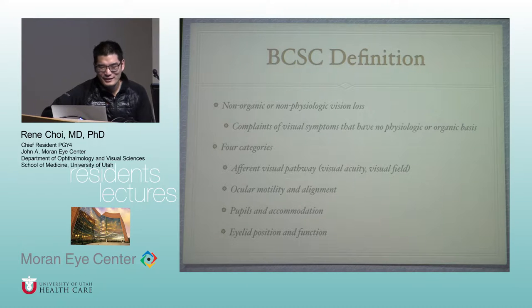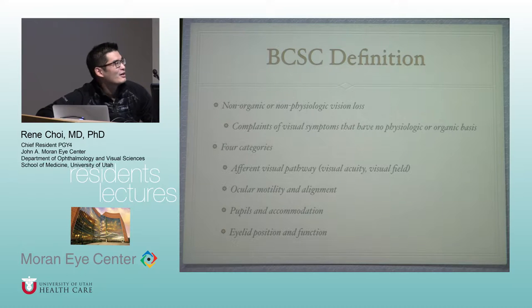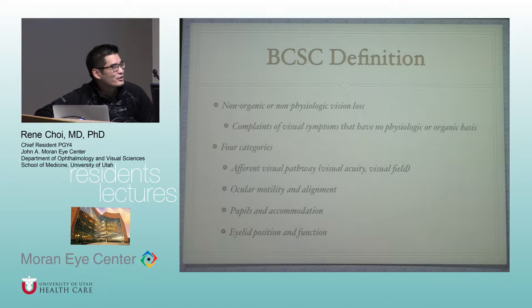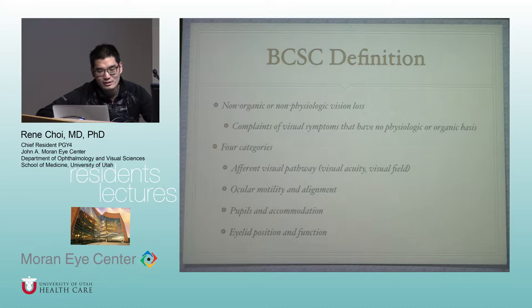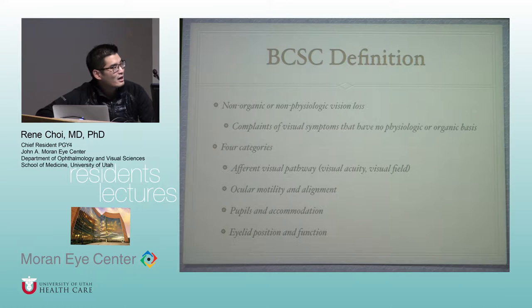The BCSC definition of functional vision loss is non-organic or non-physiologic vision loss — complaints and visual symptoms that have no physiologic or organic basis. There are four major categories: the afferent visual pathway where visual acuity or visual field is affected, ocular motility and alignment, pupils and accommodation, and eyelid position and function.